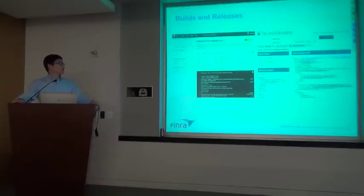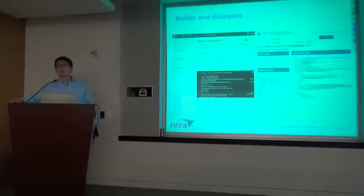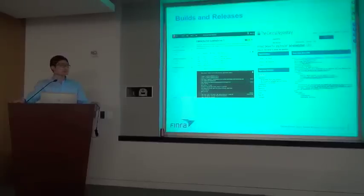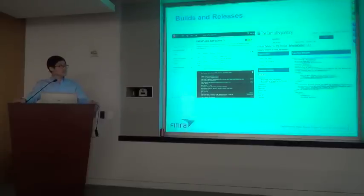Our builds happen on Travis CI, a cloud-based continuous integration server. Whenever we have code changes, pull requests, or merge requests, the build is kicked off right away and runs our unit tests. Travis CI has great integration with GitHub and offers all the CI needs we have for free. Finally, our packages are hosted on the Maven central repository, so you can easily add a dependency on our software or download the jars and source code.